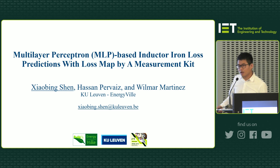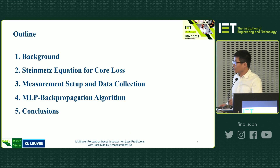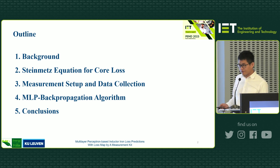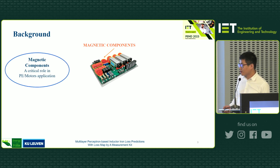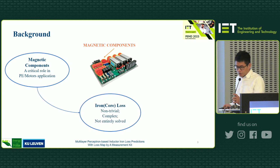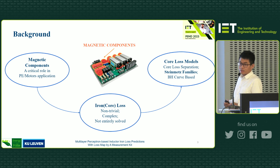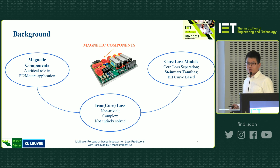We use multi-layer perceptrons today. Here I give you the outline — I will start my presentation from here. As far as we know, magnetic components are massive and play a really important role in power electronic systems. But when it comes to the designer, the iron loss is always complex and not totally solved. Normally, for the state of the art, we use core-loss separation and Steinmetz equation families and B-H curve based methods.